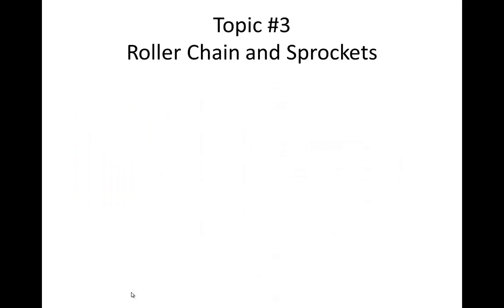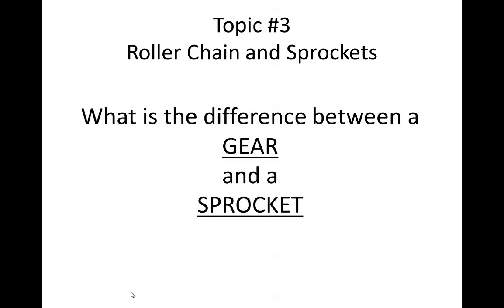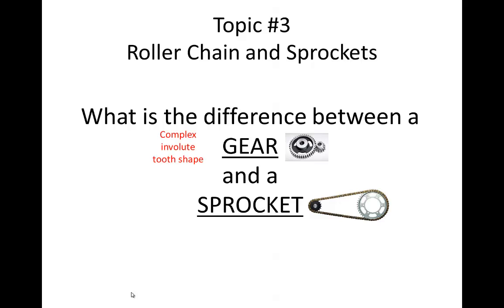Now let's go on to topic number 3 and talk about ANSI standard roller chain and sprockets. The general population does not understand the differences between gears and sprockets — these are very different components. Gears are meant to mesh directly together, while sprockets will not mesh together at all; rather they are meant to transmit power using a chain. Gear teeth have a complex involute shape, while sprockets have simple shaped teeth designed to receive a cylindrical shaped roller from a chain.